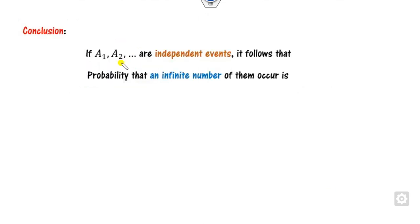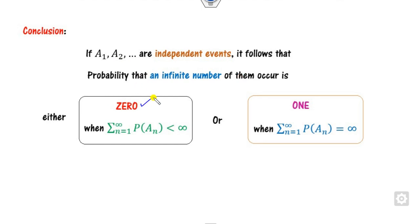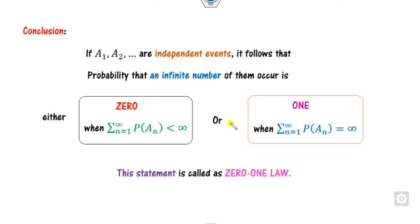In conclusion, for independent events: if the sum of the infinite series of probabilities is finite, then the probability of infinitely many events occurring is 0; if the sum is infinite (divergent), then the probability is 1. Because of these two outcomes — 0 and 1 — this is called the 0-1 law.